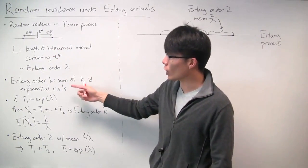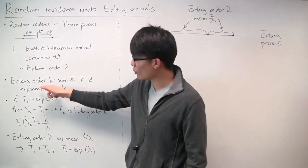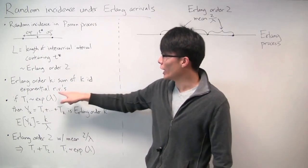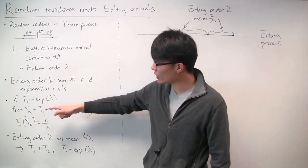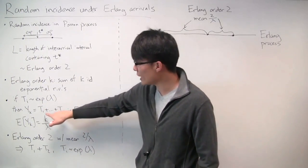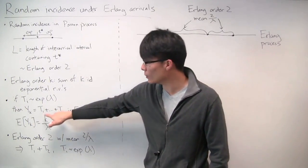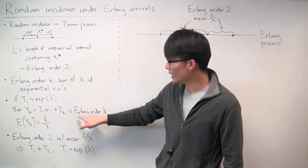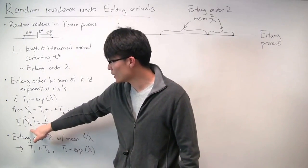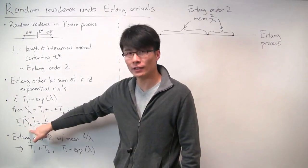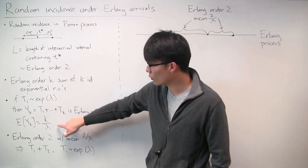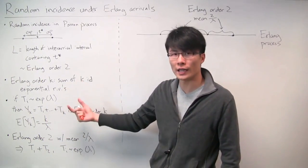That brings us to a review of what Erlang random variables are. An Erlang random variable of order k is just the sum of k independent and identically distributed exponential random variables. Specifically, if t_i is an exponential random variable with parameter lambda, then if you take k iid copies of t_i and add them up to get y_k, then y_k is an Erlang random variable of order k. The mean of y_k is k over lambda.